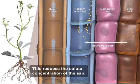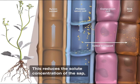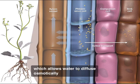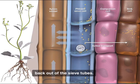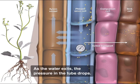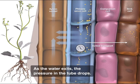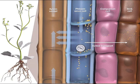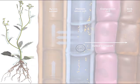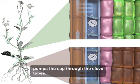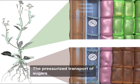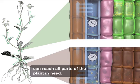This reduces the solute concentration of the sap, which allows water to diffuse osmotically back out of the sieve tubes. As the water exits, the pressure in the tube drops. The pressure difference between source and sink pumps the sap through the sieve tubes. The pressurized transport of sugars can reach all